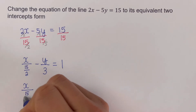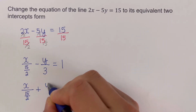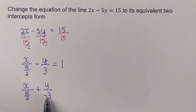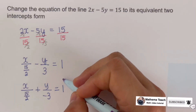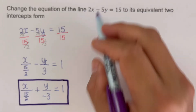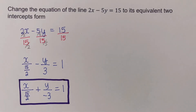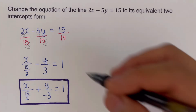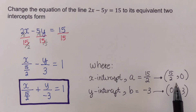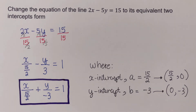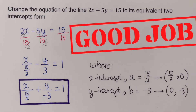We change the minus into a plus with a negative denominator, giving us x/(15/2) + y/(−3) = 1. This is the equivalent two-intercepts form, where the x-intercept is 15/2 and the y-intercept is −3. The x-intercept coordinate is (15/2, 0) and the y-intercept coordinate is (0, −3).